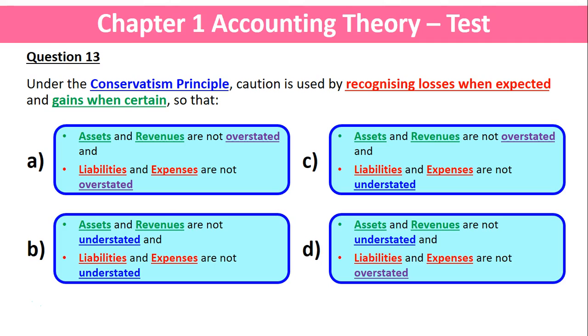And lastly, option d: assets and revenues are not understated, and liabilities and expenses are not overstated.